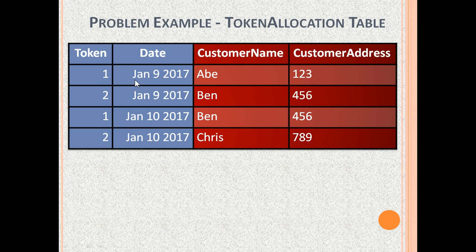For example, on January 9th, Token 1 was given to Abe. On the same day, January 9th, Token 2 was given to Ben. The candidate key in this table is the Token and Date columns together, because this pair is unique in every row.